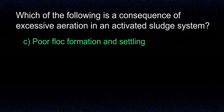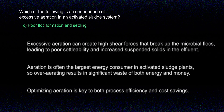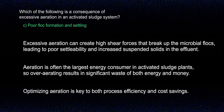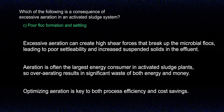The answer is C, poor flock formation and settling. Excessive aeration creates too much turbulence within the aeration basin, causing flock particles to break apart. Flock particles are clusters of bacteria and organic matter essential for proper settling and treatment. When they become too small or too few, they lose the ability to settle effectively in the secondary clarifier, leading to poor settling performance and higher suspended solids in the effluent. Additionally, aeration is typically the most energy-intensive process at an activated sludge plant, so running it beyond what's necessary also results in unnecessary energy consumption and higher operational costs.